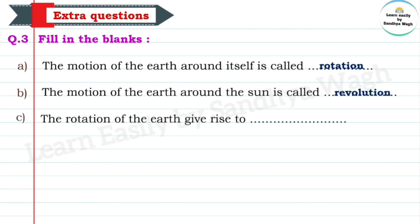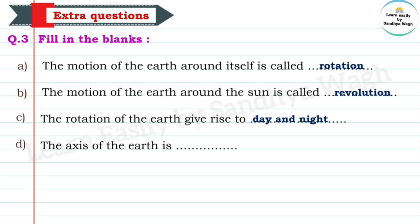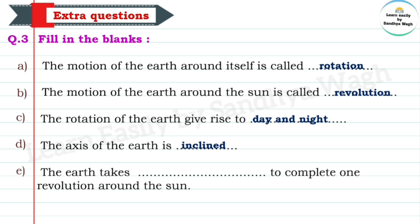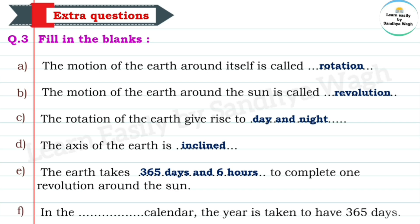C: The rotation of the earth gives rise to day and night. D: The axis of the earth is inclined. E: The earth takes 365 days and one fourth day to complete one revolution around the sun. F: In the Gregorian calendar, the year is taken to have 365 days.